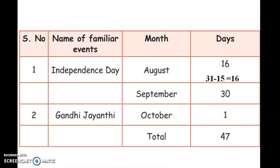For Independence Day, from August 15th we count: remaining days in August are 16, September has a full month of 30 days, and October up to the 2nd is 2 days. Adding these together gives 47 days between Independence Day and Gandhi Jayanti.